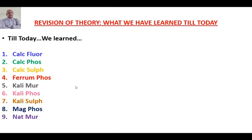Ferrum phosphoricum is the remedy for hyperemia, congestion, the first stage of inflammation, and is good for formation of blood corpuscles and in leukemia. Kali muriaticum is for the second stage of inflammation where plastic exudate happens — in cases of discharge from the ears, a typical catarrhal or plastic discharge, and joint effusion, Kali mur plays a vital role. Kali sulphuricum is for the third stage of inflammation with typical yellowish discharge and yellowish coating on the tongue.